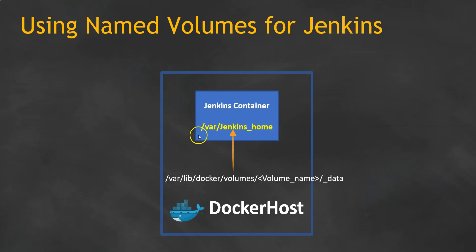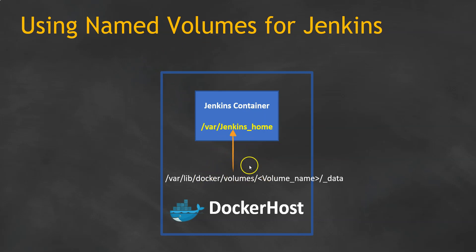To demonstrate this example, I am going to create a Jenkins container. While creating our container, we are going to use a named volume. Whenever we use a named volume, it is going to create volumes under /var/lib/docker/volumes. This will get mapped to /var/jenkins_home inside our Jenkins server.